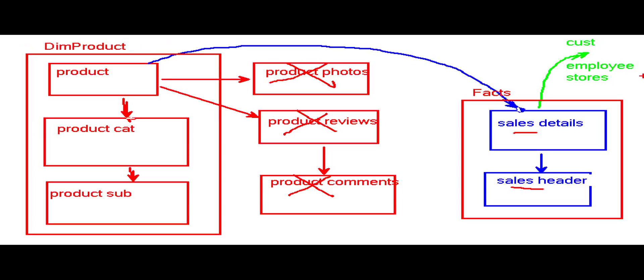Dim product is our dimension. Dim stands for dimension, of course. Then our facts over there, and actually that's going to be fact sales like that, fact sales.